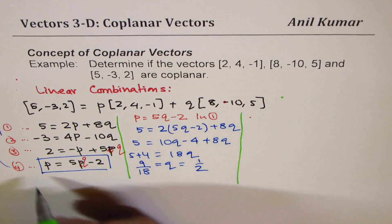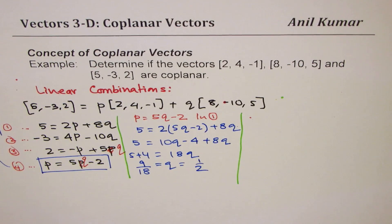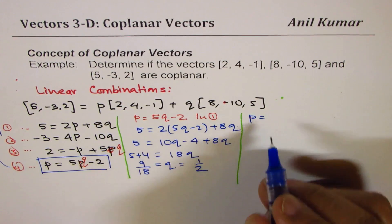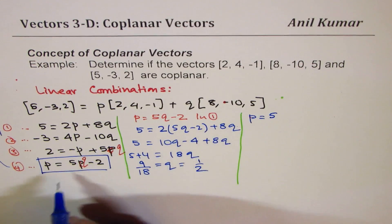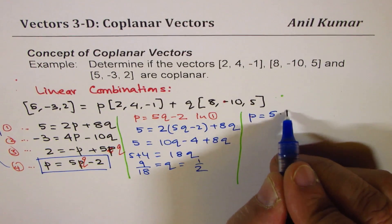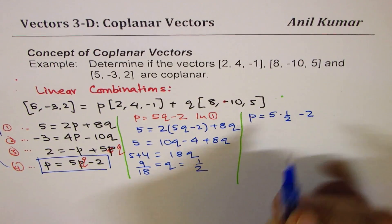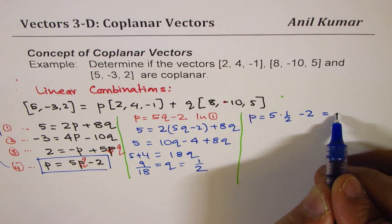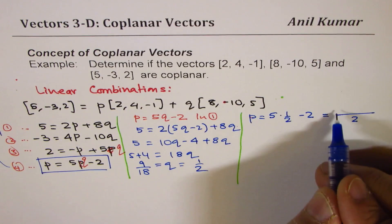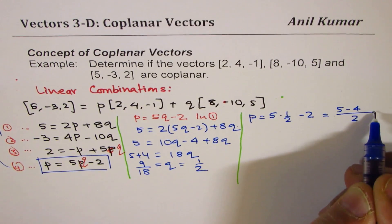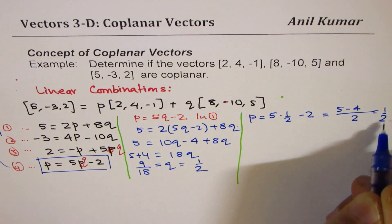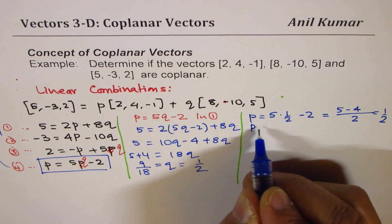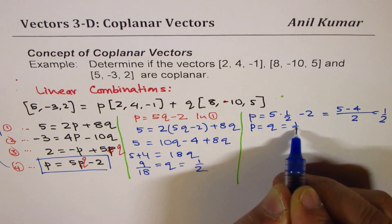If Q is 1/2, what is P equals to? Let's calculate. P is equals to 5 times Q, which is 1/2 minus 2. And that gives you, let's take common denominator of 2. We have 5 minus 4, which is also 1/2. So P is also 1/2. We get P equals to Q equals to 1/2 in our case.